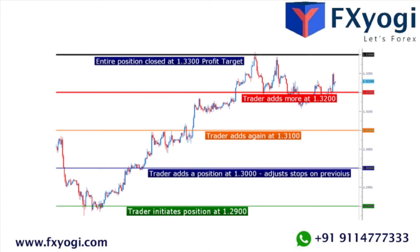Here is one way to set up this trade: short 2500 units of EUR/USD at 1.2900. According to our pip value calculator, 2500 units of EUR/USD means your value per pip movement is $0.25.